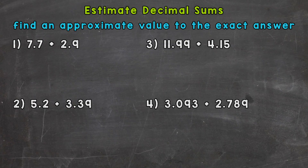When we estimate, we find an approximate value to the exact answer. What we're going to do is round each decimal to the nearest whole number, then add — that's going to give us our estimate. Let's jump right into number 1.